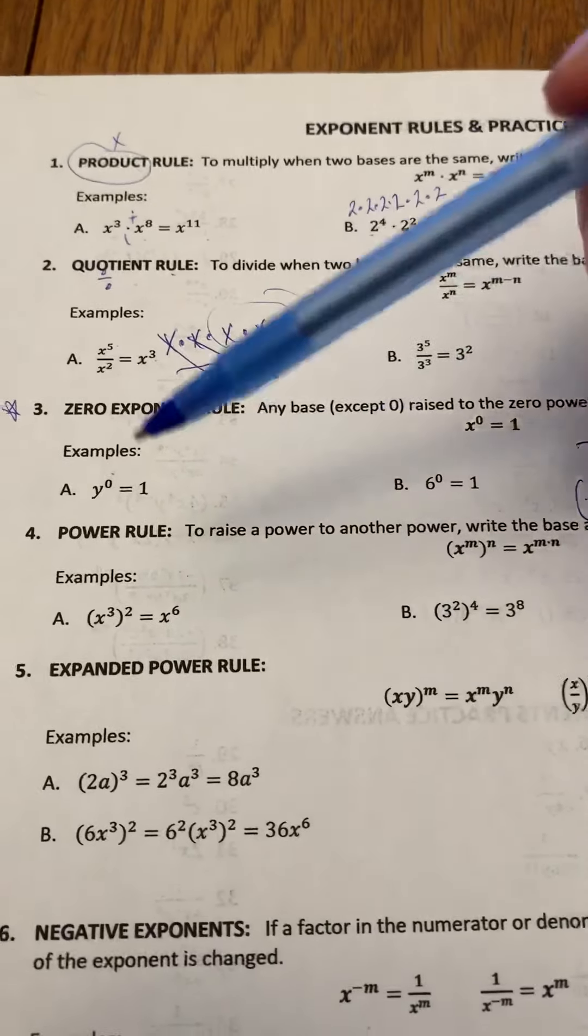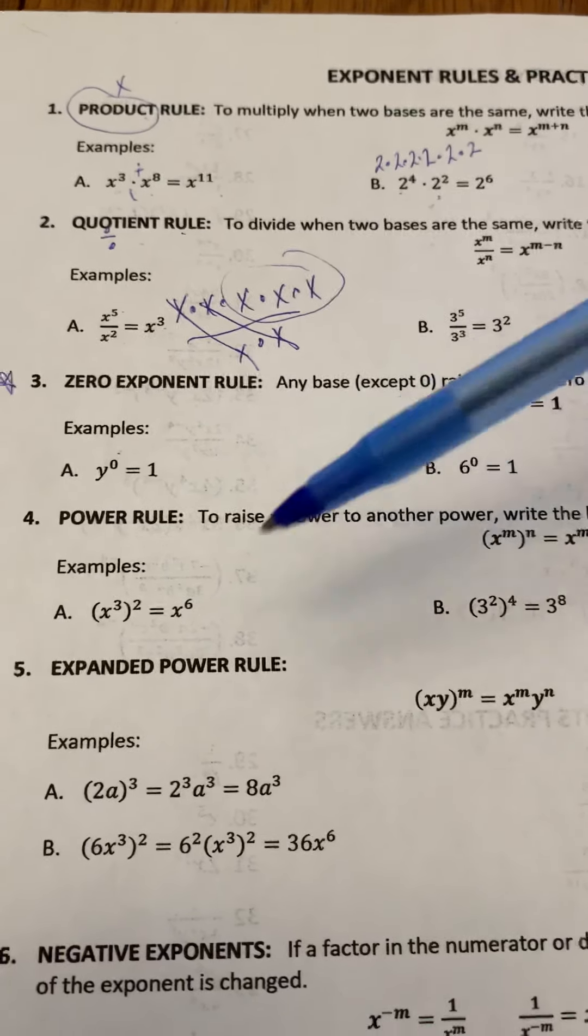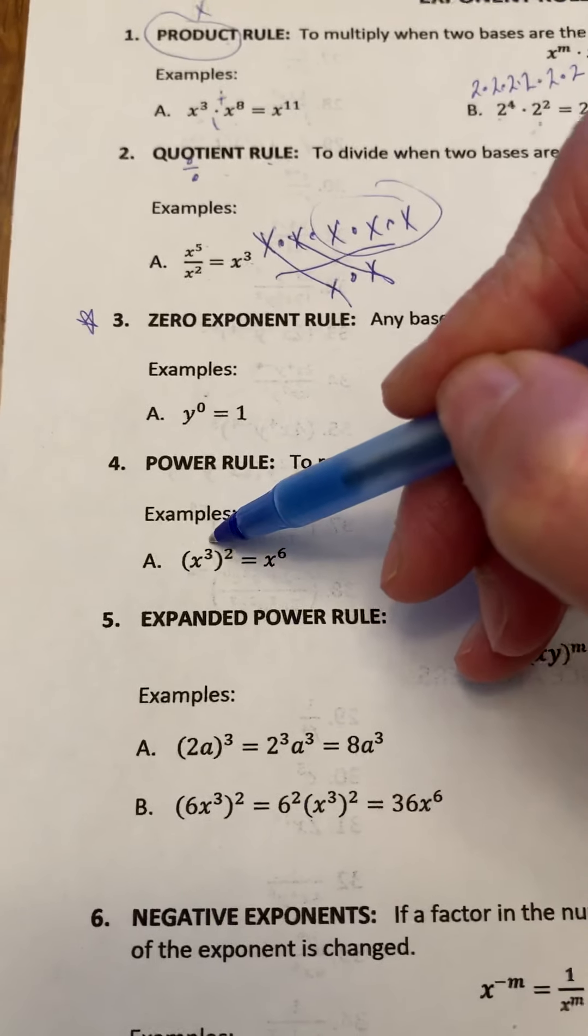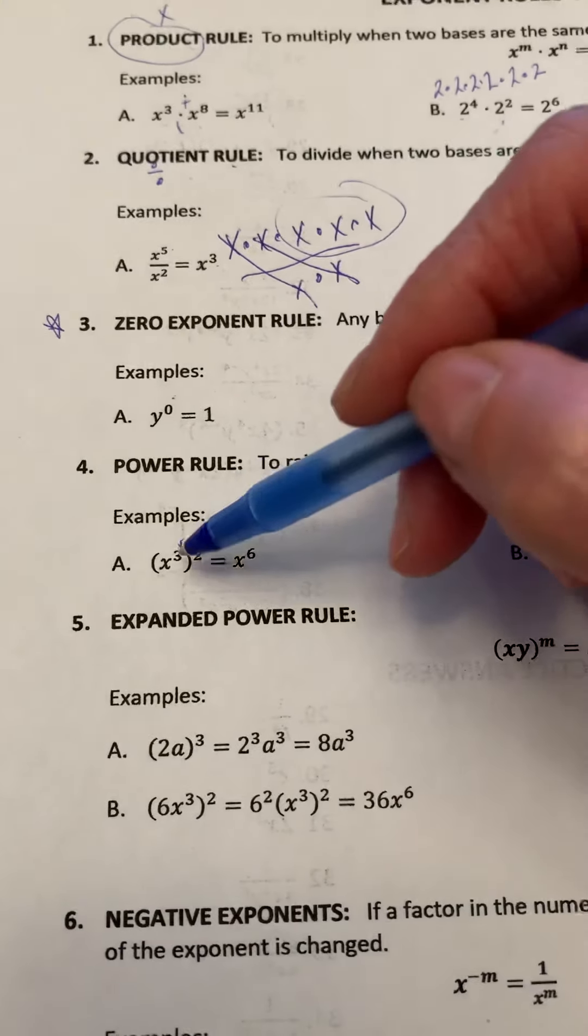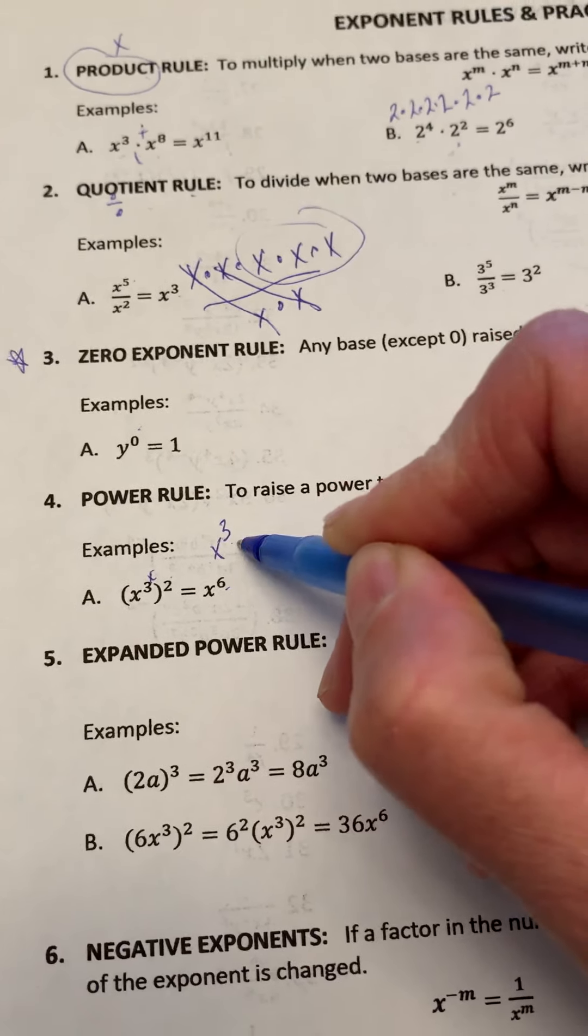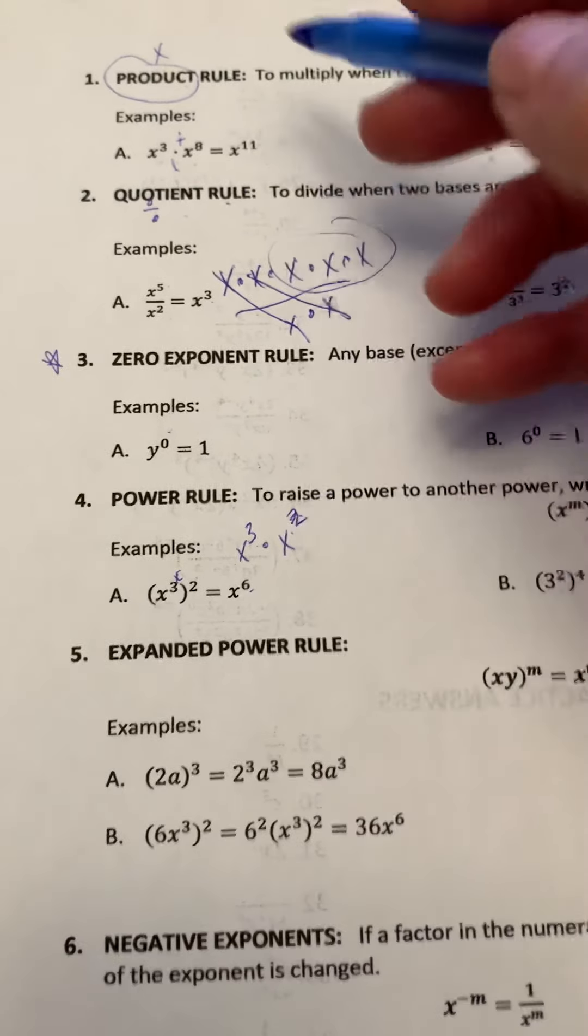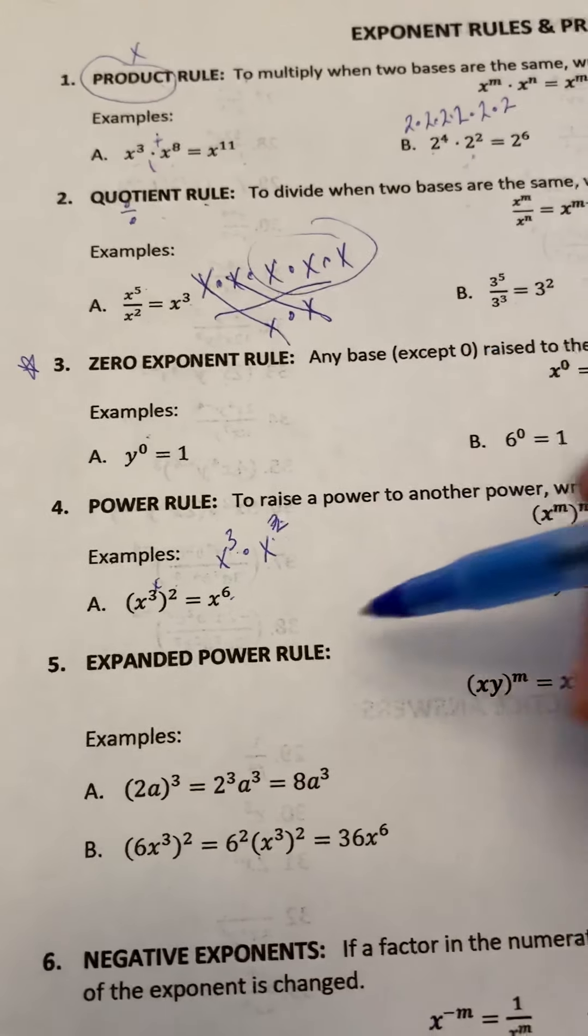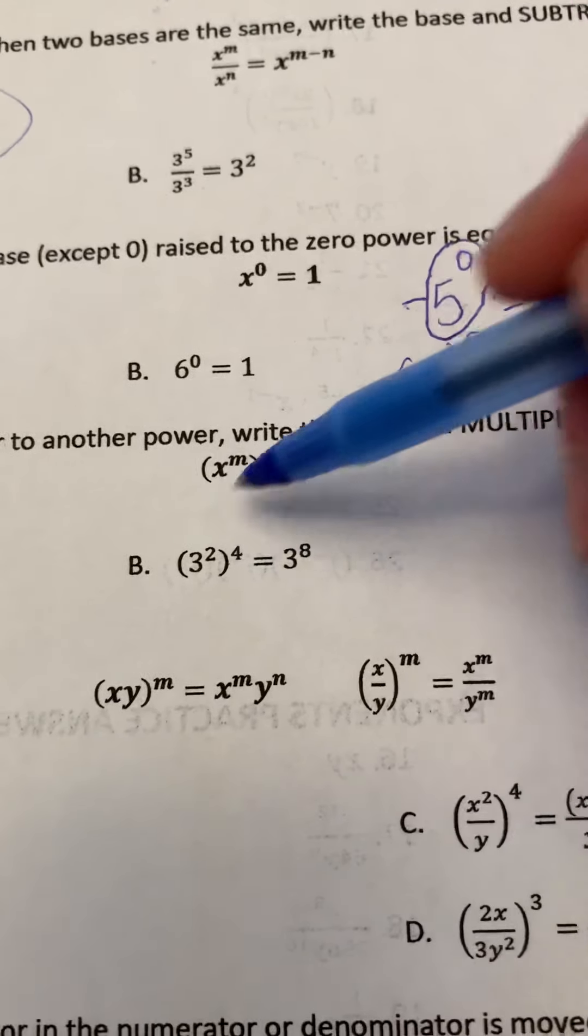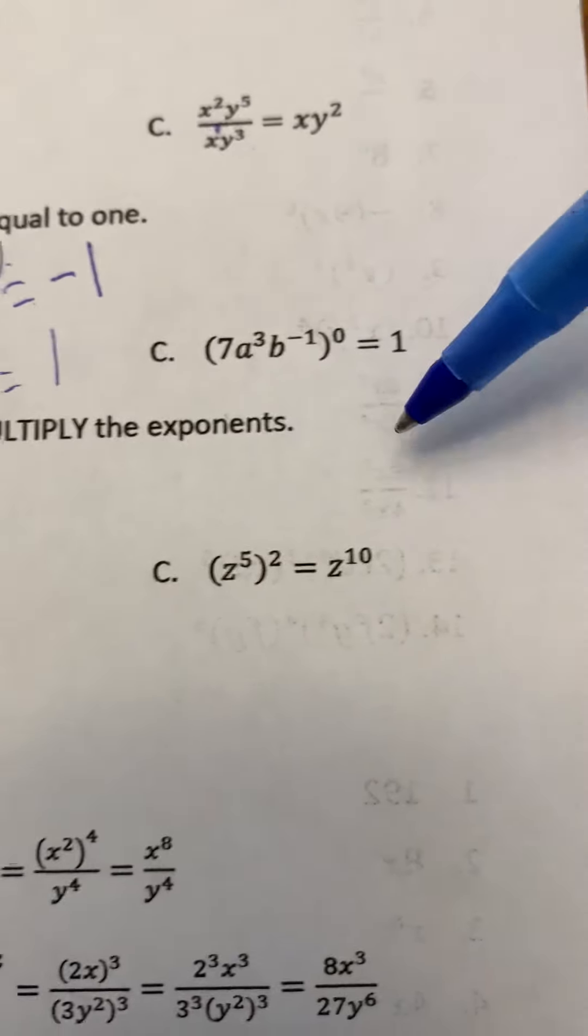We call this the power rule. When we have a power to a power—we have an exponent and then right outside of the set of brackets we have another exponent—what we're going to do is multiply those. The shortcut is we multiply them. Why? Because this is x cubed times x cubed, because it's x cubed squared. Then we could go back to the product rule, which is we add the exponents. So here we would get 3 raised to the exponent 8, and here we would get z raised to the exponent 10. We simply multiply those exponents.